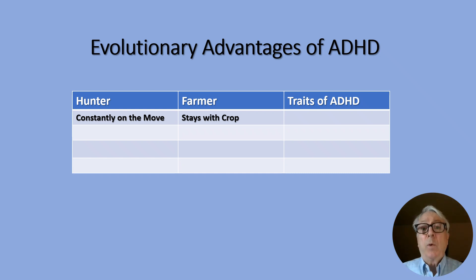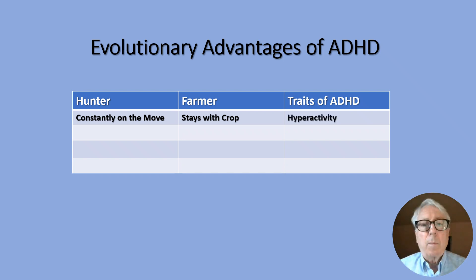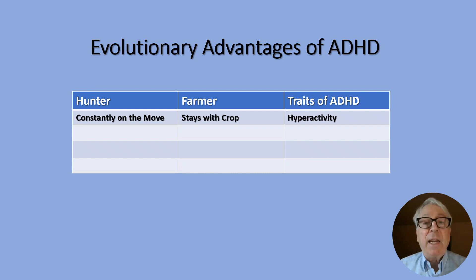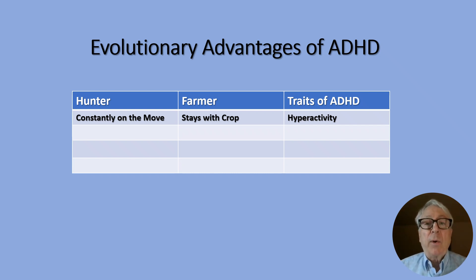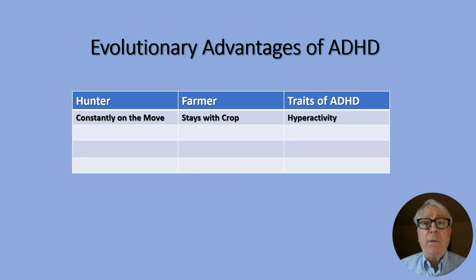The farmer, on the other hand, doesn't move around a lot. He stays with his crop, puts the seed into the ground, and waits. There needs to be a lot of ability to delay gratification while waiting for the plant to germinate, grow, and then produce fruit. A lot of patience is required. Hartmann suggests that what we regard as a symptom of ADHD — that is, hyperactivity — is actually a trait that was preserved through natural selection from the era of the hunter during the Paleolithic age, because it was an adaptive trait that allowed him to get food and avoid becoming food, thus prospering and passing this trait onto future generations.